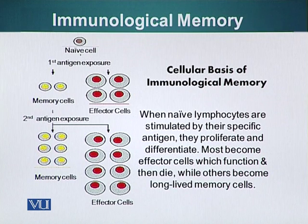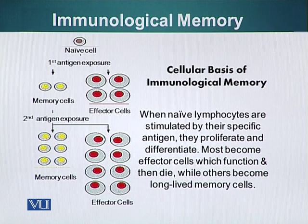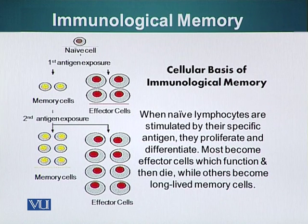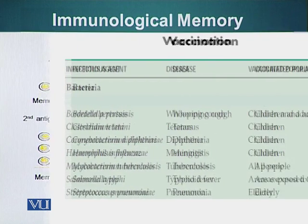Memory cells, however, are much longer-lived. Because of these memory cells, after the first exposure, a greater number of memory cells are produced and remain in the system. The second time the antigen is encountered, it is easier for memory cells to transform into effector cells, which is why we see such a sharp and more robust immune response the second time the same antigen is encountered. That is the cellular basis of immunological memory.